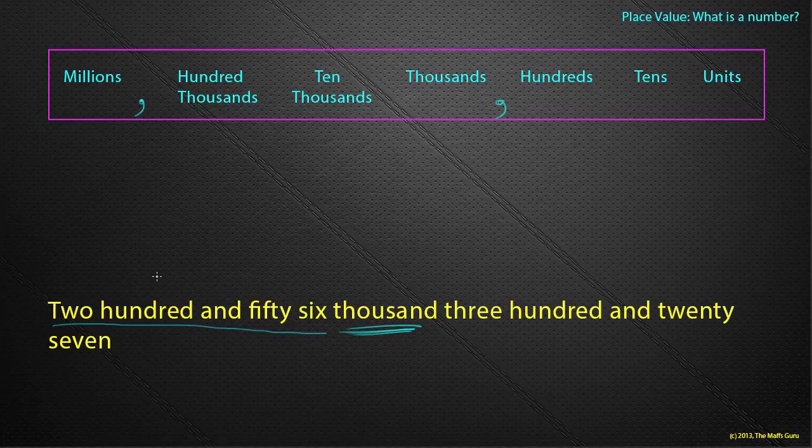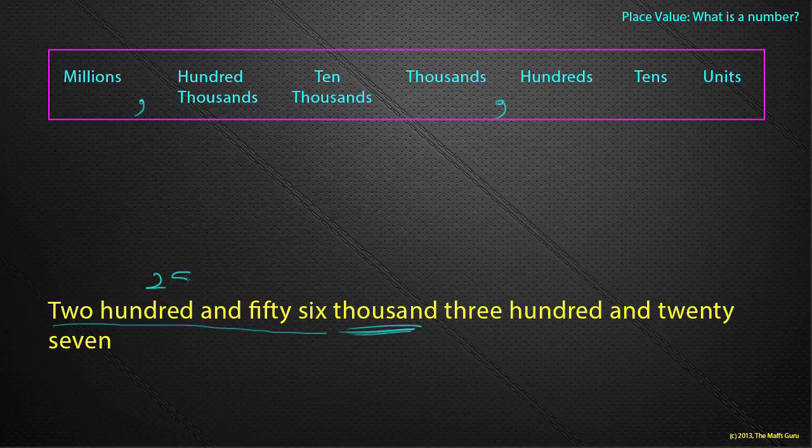Well, what does the number two hundred and fifty-six look like? Well, there's two hundred and fifty-six. There's a comma.